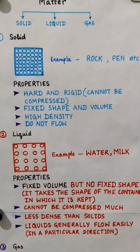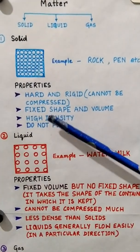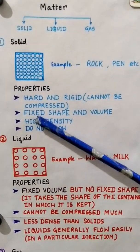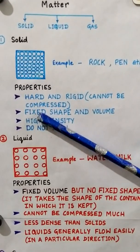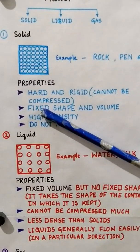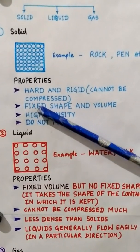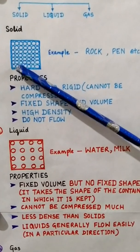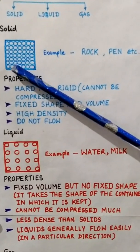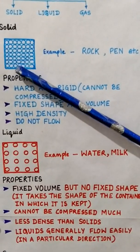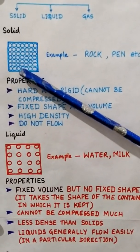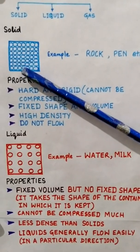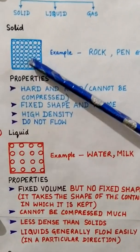The second property of solid is that it has a fixed shape and volume. As already stated, the particles are closely packed so there is no scope of movement of particles. They are fixed in their places and hence give a fixed shape and volume to the solids.